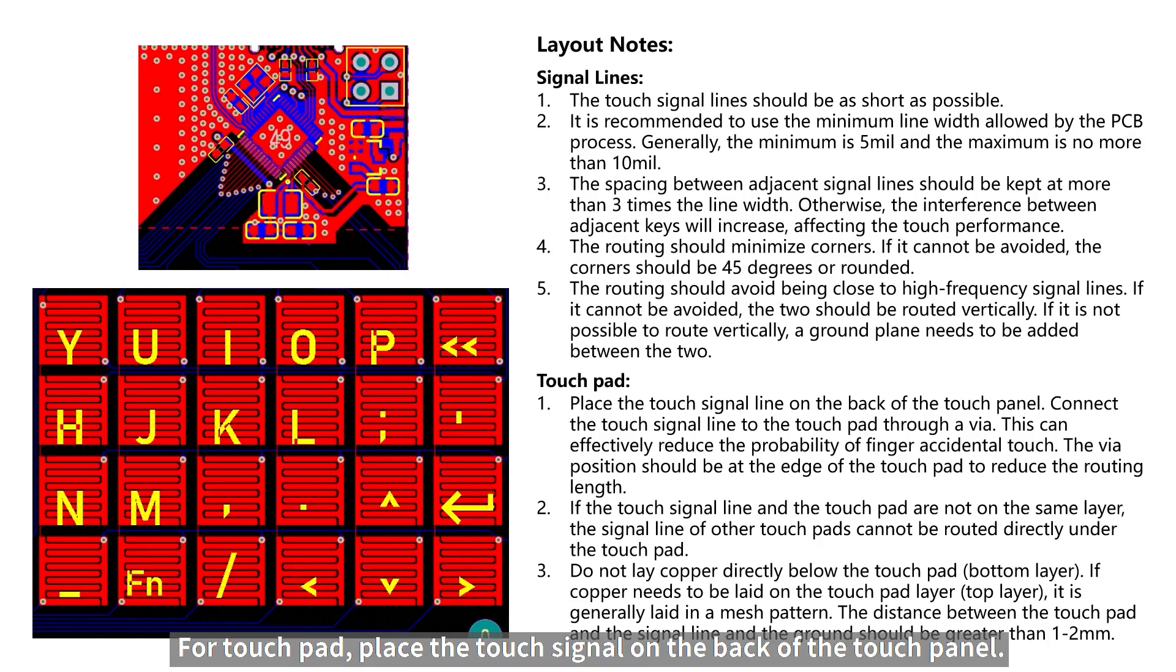For touchpad, place the touch signal on the back of the touch panel. Connect the touch panel signal to the touchpad through a via. This can effectively reduce the probability of finger accidental touch. It is recommended that the vias be located at the edge of the touchpad to reduce the trace length.